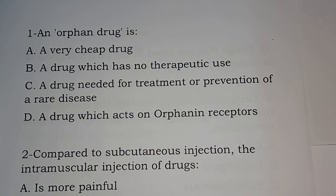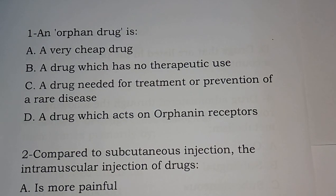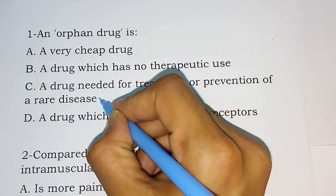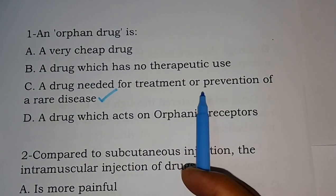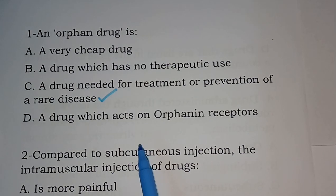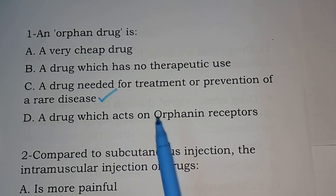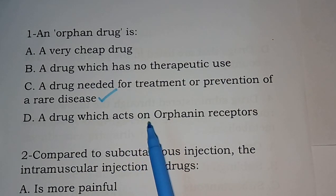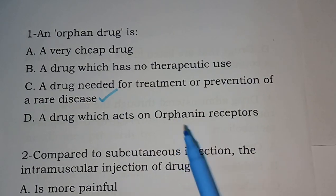Question number one: an orphan drug is — options are: a very cheap drug; a drug which has no therapeutic use; a drug needed for the treatment or prevention of a rare disease; a drug which acts on orphan receptors. The correct answer is option C. An orphan drug is used for the treatment or prevention of a rare disease. This orphan drug is also used for some endemic diseases, so maybe that option will appear — at that time you have to select that option.